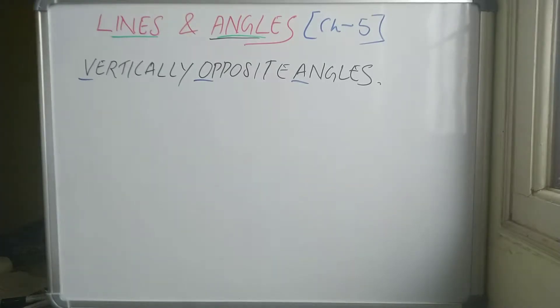Today we are going to discuss vertically opposite angles. So vertically opposite angles are basically like this.